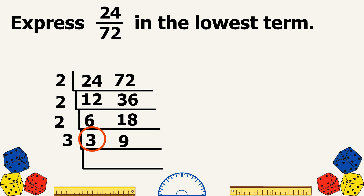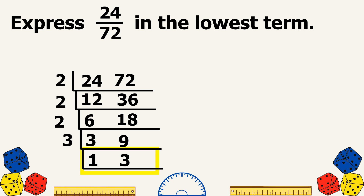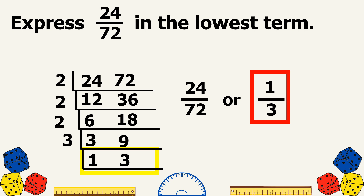Let's continue dividing: 3 divided by 3 equals 1, and 9 divided by 3 equals 3. Now the only common prime factor that can divide both 1 and 3 is only 1, meaning 1 third is already in the lowest term. So the lowest term of 24 over 72 is 1 third.